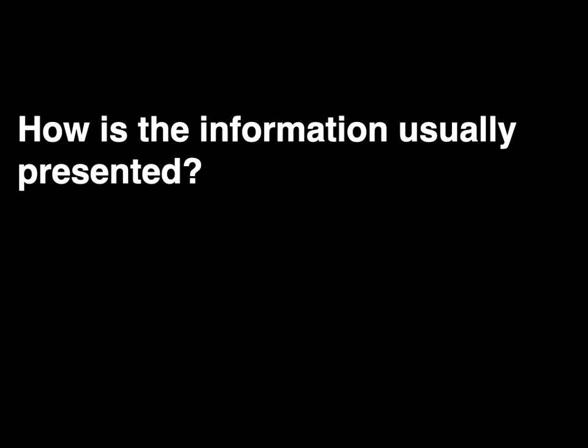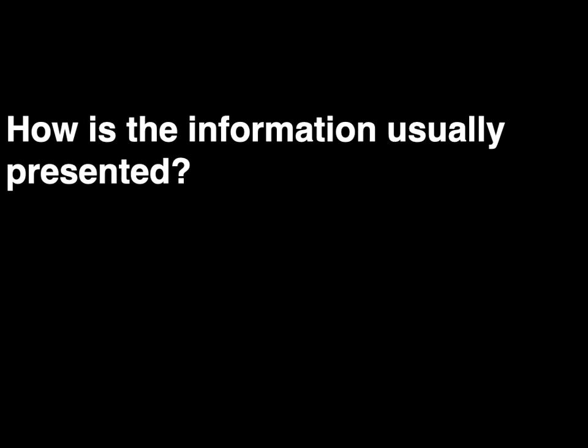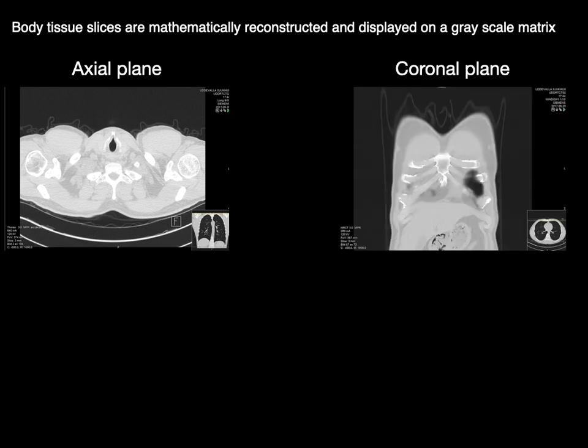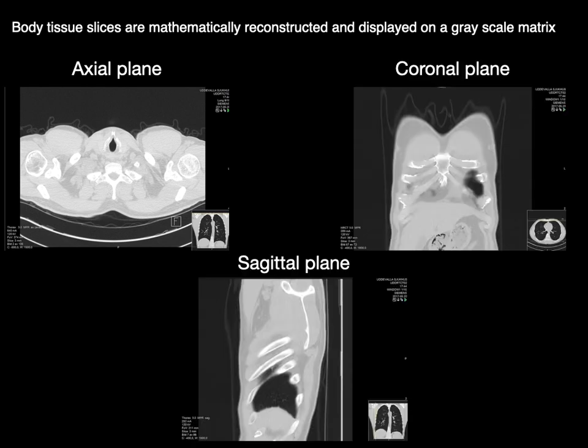How is the information usually presented? Body tissue slices are mathematically reconstructed and then displayed on a grayscale matrix. There's the axial plane, coronal, and sagittal planes — all on a grayscale matrix.